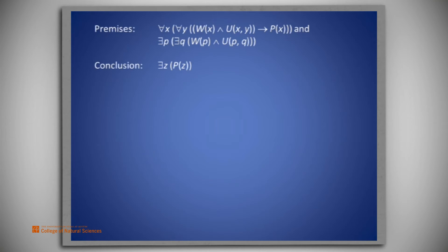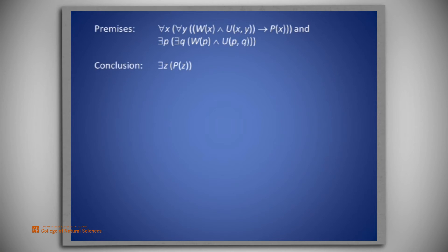It appears that a simple use of modus ponens will suffice for the proof after the instantiations. But we must be careful to do the existential instantiations prior to the universal instantiations. So we will instantiate the second premise twice, and then using the names assigned to those instantiations, we will instantiate the first premise also twice. That's the key to our proof. If you would like to complete this proof on your own, please pause this video now.